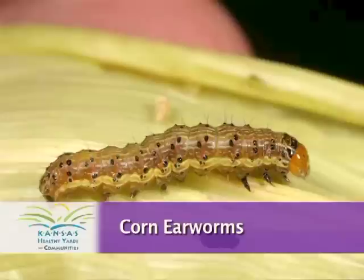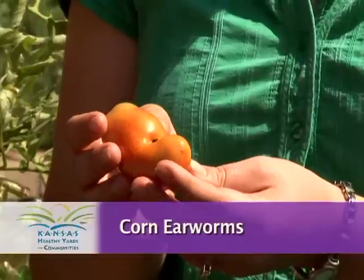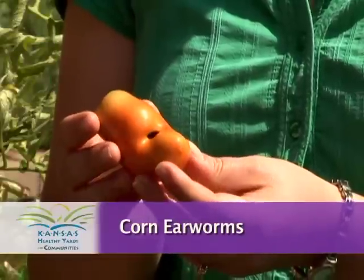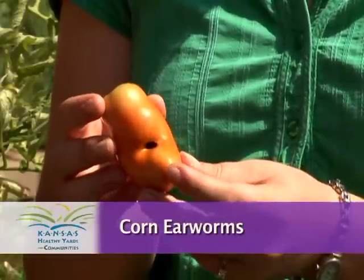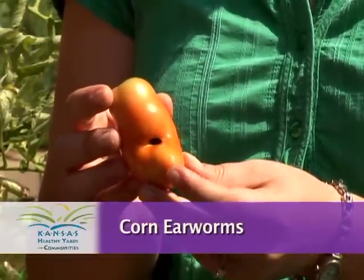Fruit worms are also known as corn earworms. If you see worms in your sweet corn, it's the same caterpillar that's attacking your tomato plants. They'll just bore into the fruit, leaving a little hole in the tomato.